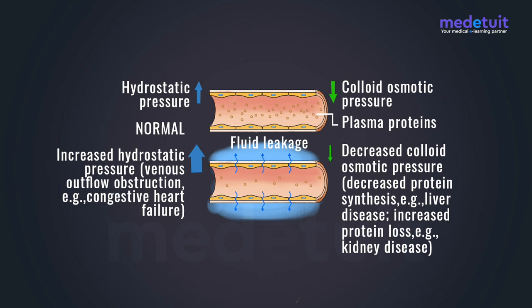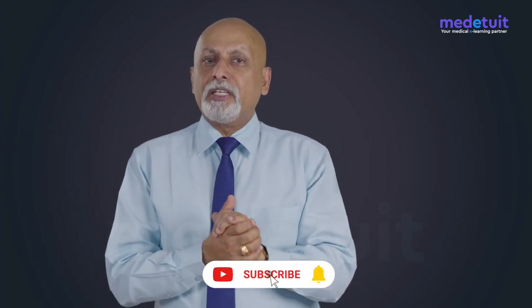Any condition causing a drop in albumin levels — such as liver disease or kidney disease — results in hypoalbuminemia. When hypoalbuminemia occurs, the inward pressure is reduced and the outward pressure becomes more dominant. Plasma starts leaking out from the capillary and gets collected in the interstitial space, a condition called edema. This is why edema is one of the clinical features seen in patients with liver disease or kidney disease.